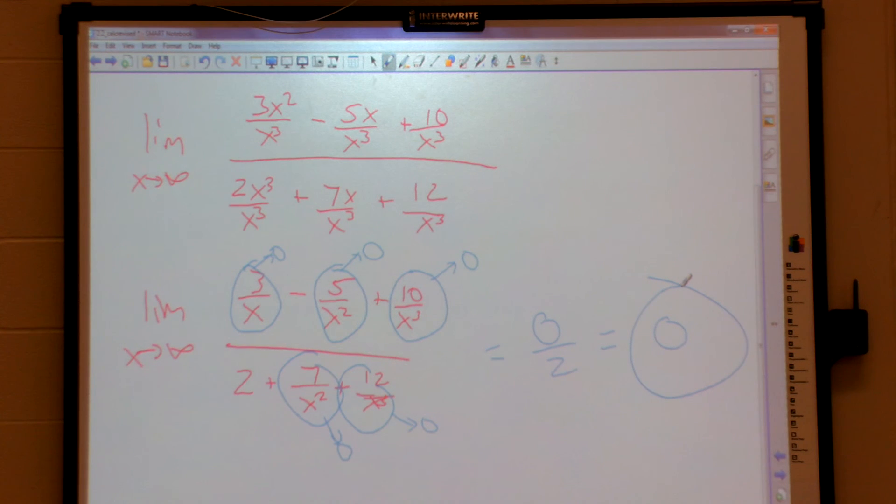Okay. Pretty much, if you have a constant up top and a variable on the bottom, that bottom is going to get bigger and bigger and bigger. The whole thing is going to go to zero. Yeah? I like that. I thoroughly tried that. I like that.